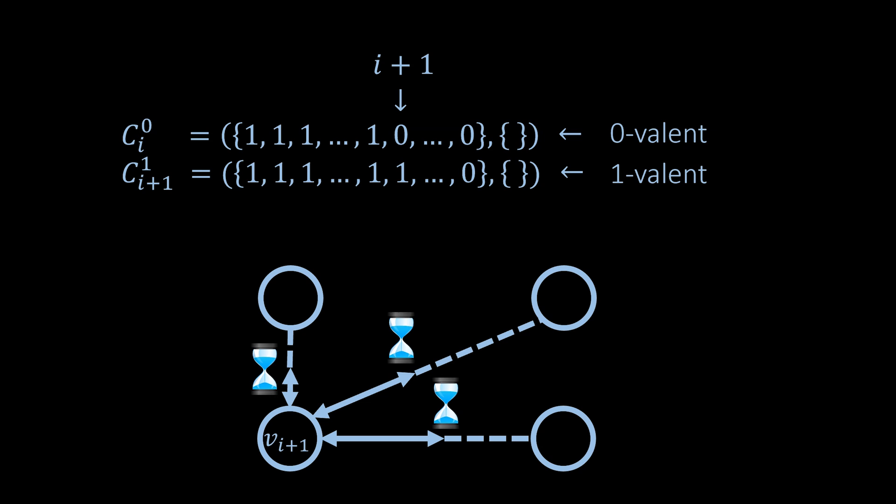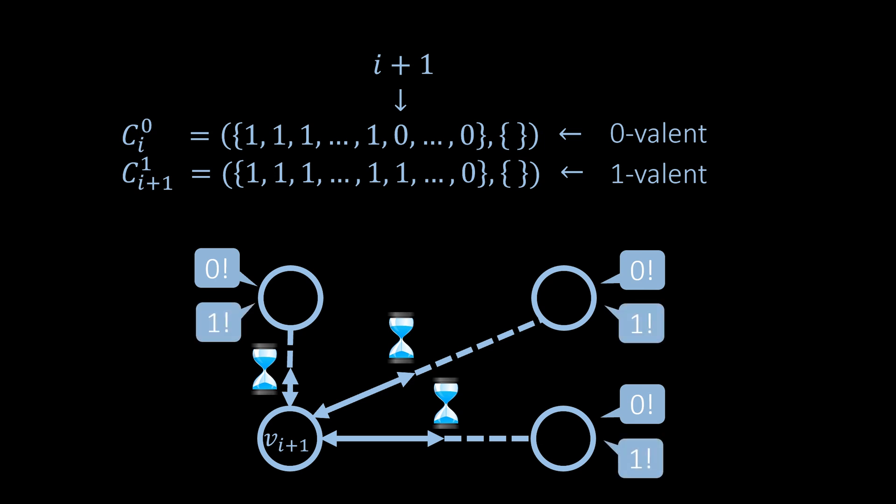The other nodes cannot wait indefinitely for messages from that node, because the algorithm wouldn't terminate if exactly this node crashed. So the other nodes must decide on a value without hearing from that particular node. However, if they decided on 0 but the value at this node is 1, that would be a contradiction because we said that this configuration is 1-valent. Similarly, if the nodes decide on 1 but the value at this particular node is 0, this is a contradiction because the configuration is 0-valent. We conclude that not all of these configurations can be univalent, which proves that bivalent configurations exist.